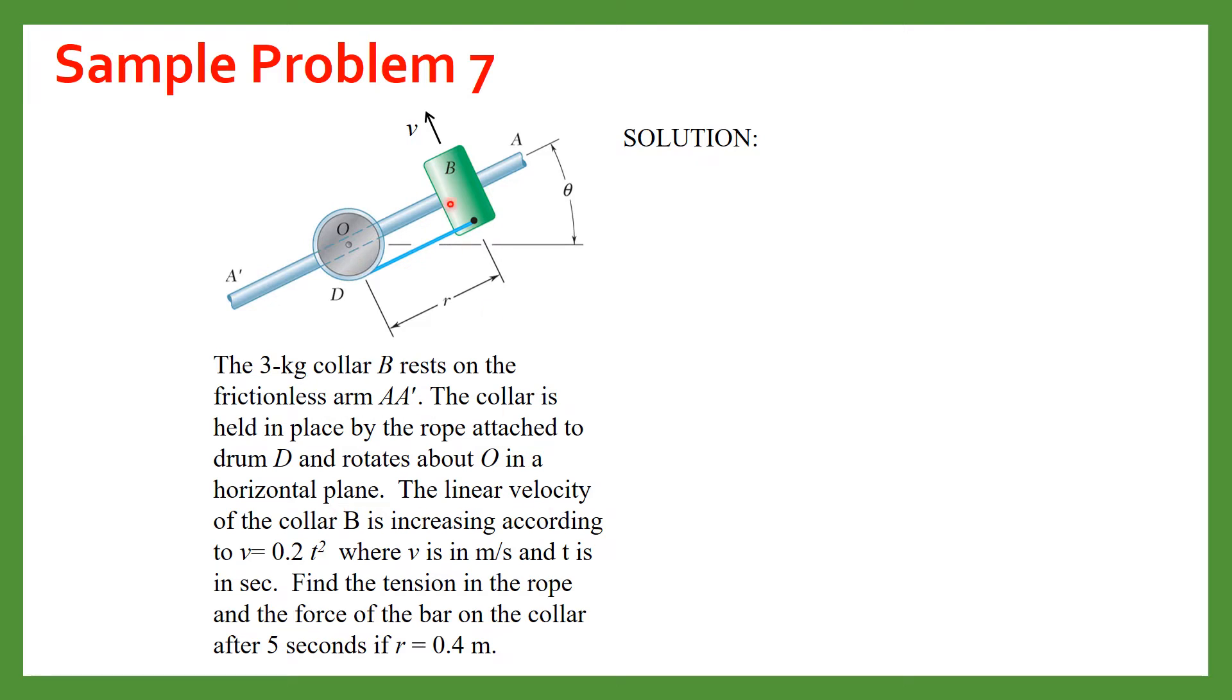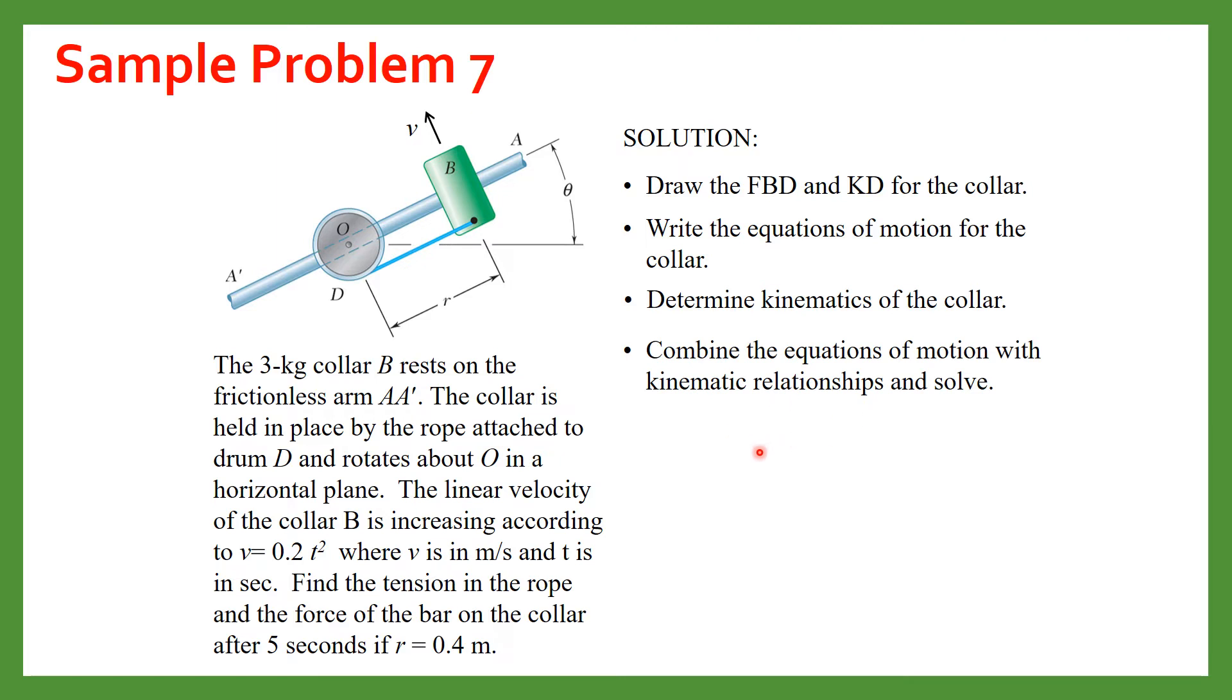The linear velocity of this collar is given as this V is equal to 0.2 T square. We need to find the tension in the rope and the force that will be exerted on the collar after 5 seconds. So first we will draw the FBD and KD then we will write the equations of motion and then we will determine the kinematics and then we will combine the equation of motions with kinematic relationships and solve for the unknowns.